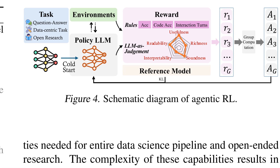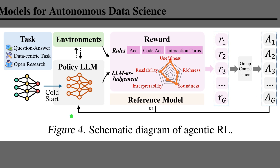Figure 4 shows how the agent learns with reinforcement learning, which means the model acts in environments and improves from reward signals. The left side depicts tasks flowing into a policy that interacts with real data tools, so feedback shapes next actions. The central reward panel mixes rule checks, code accuracy, interaction efficiency, and report quality judged for usefulness and readability. On the right, group computation aggregates rewards, similar to group relative policy optimization, while a reference model adds a KL penalty to keep behavior stable.